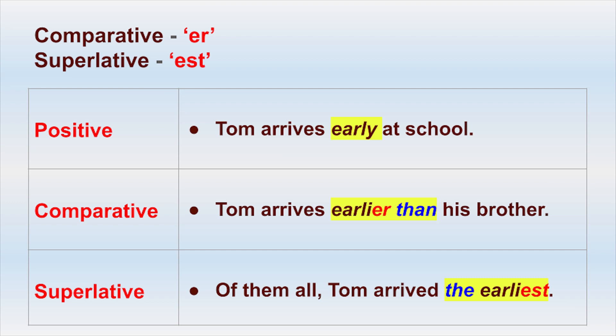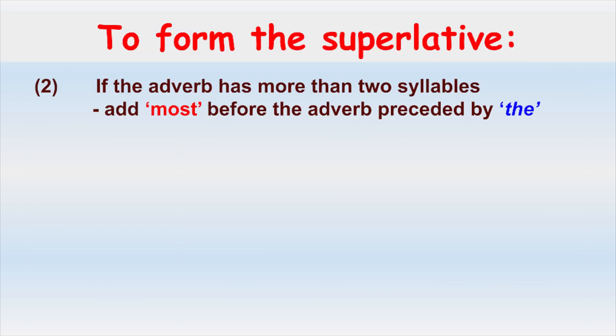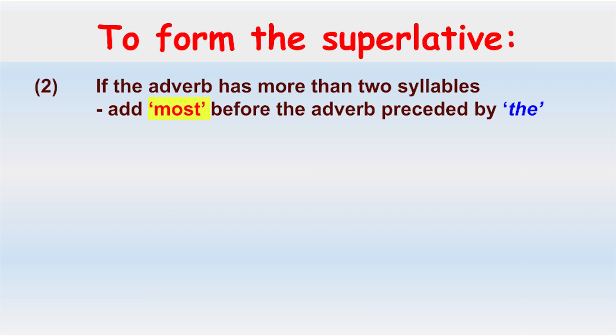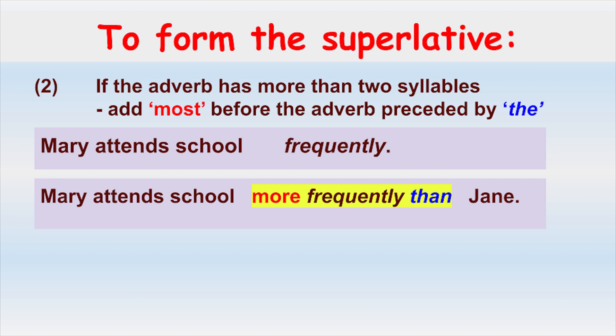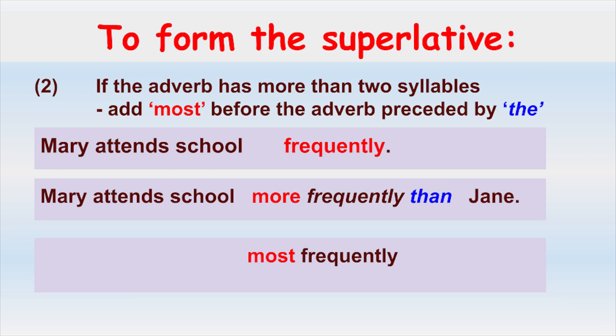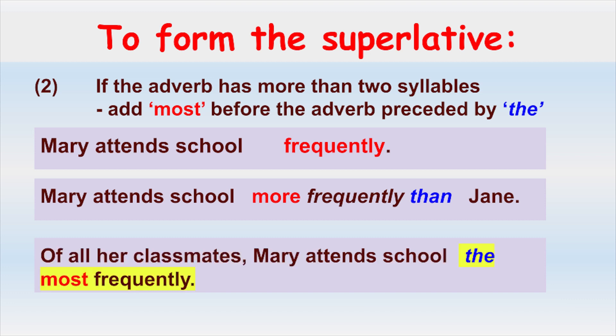Now let's look at rule number two to form the superlative. If the adverb has more than two syllables, we add 'MOST' before the adverb preceded by 'THE.' Using our second sentence as an example, we previously placed 'more' in front of 'frequently' and 'than' after it to form the comparative. Now to form the superlative, we place 'THE MOST' in front of the adverb. Our sentence reads: of all her classmates, Mary attends school the most frequently.